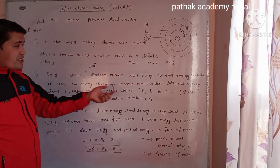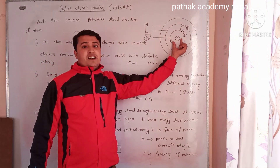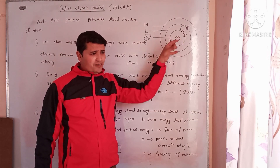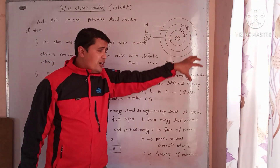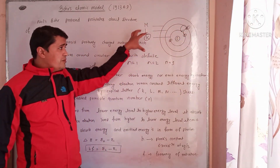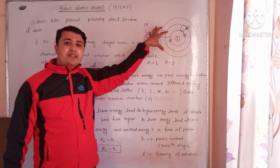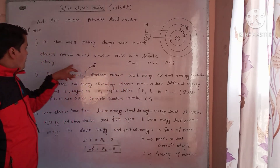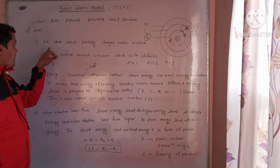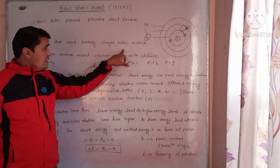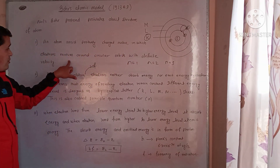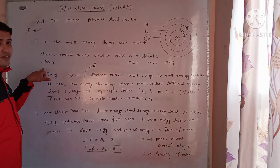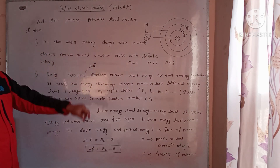According to the first postulate, an atom consists of a central positively charged nucleus in which electrons revolve in circular orbits with definite velocity.